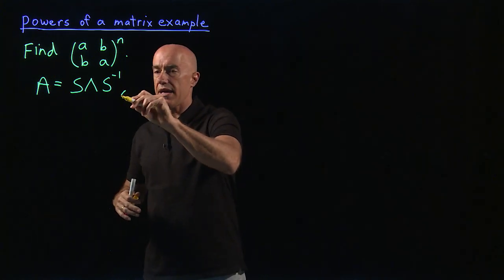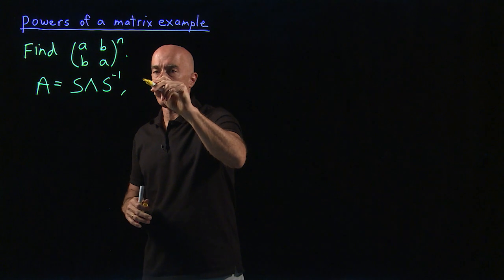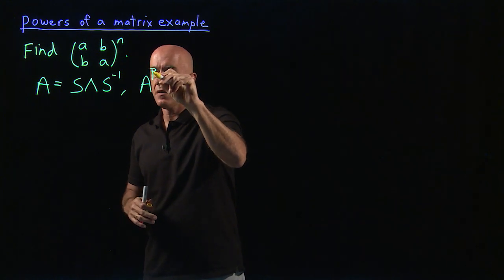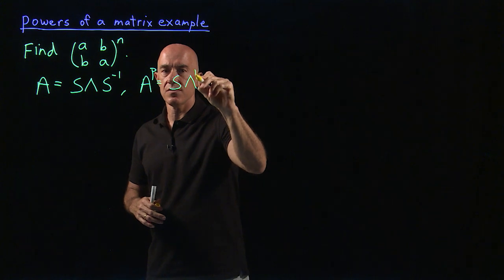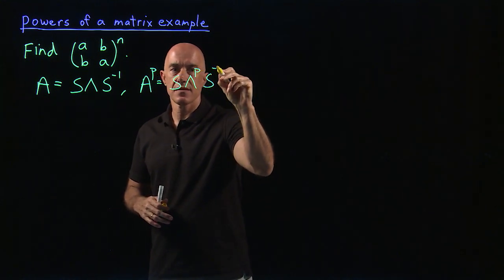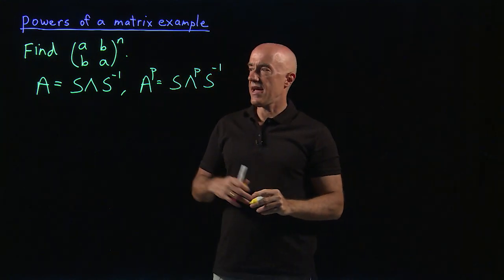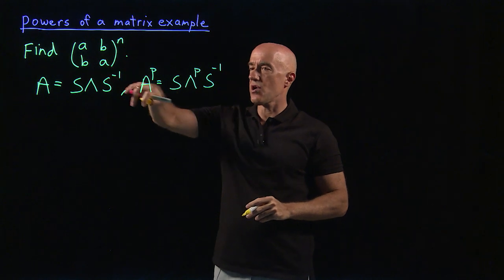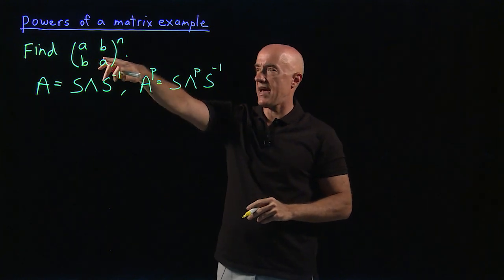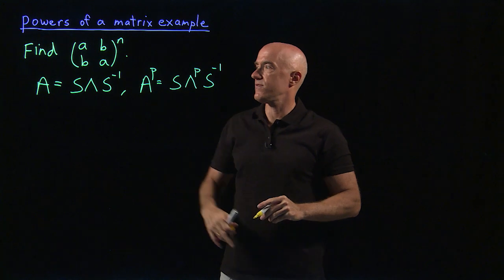We can then raise A to a large power. So A to the P then is equal to S lambda to the P times S inverse. We know we've already computed S and S inverse for this matrix.